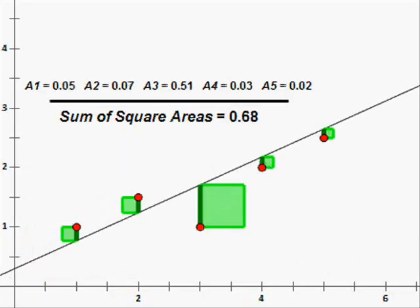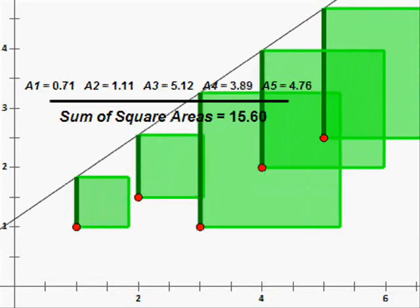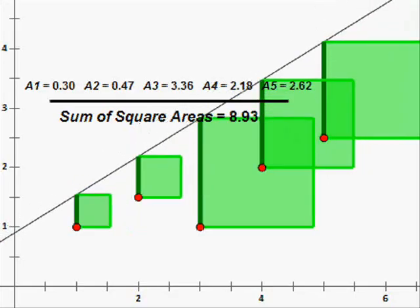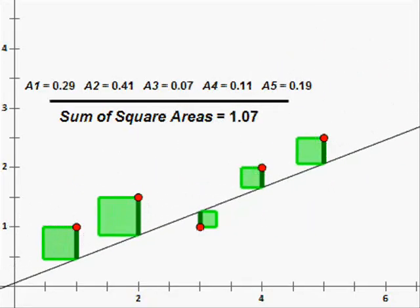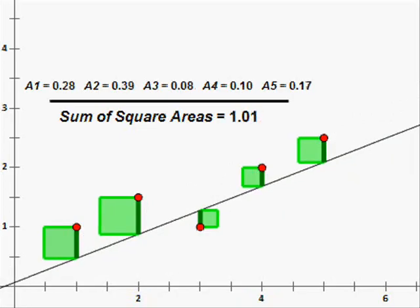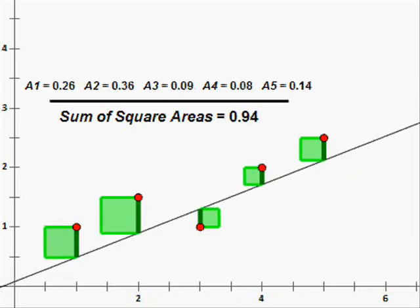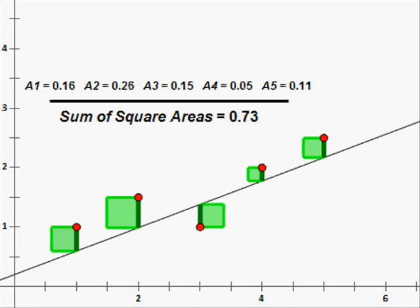So you can see the further we get away from the data, the bigger those squares get. So what you want to do is you want to finagle those square areas until you've minimized, minimized the error in those squares.